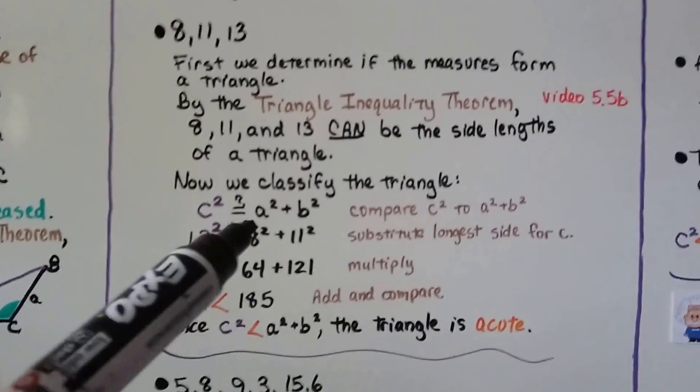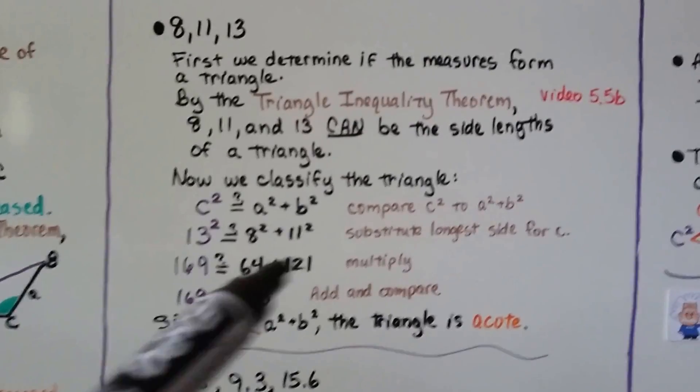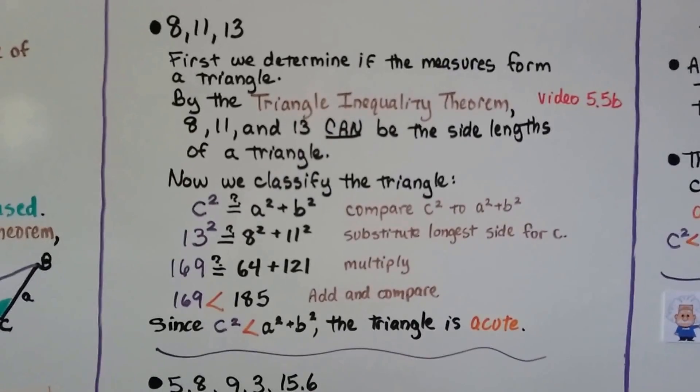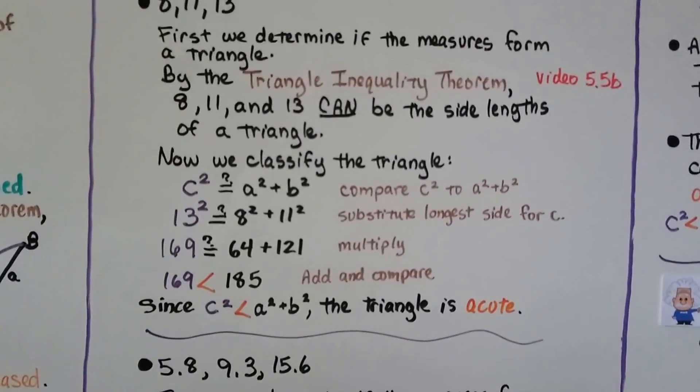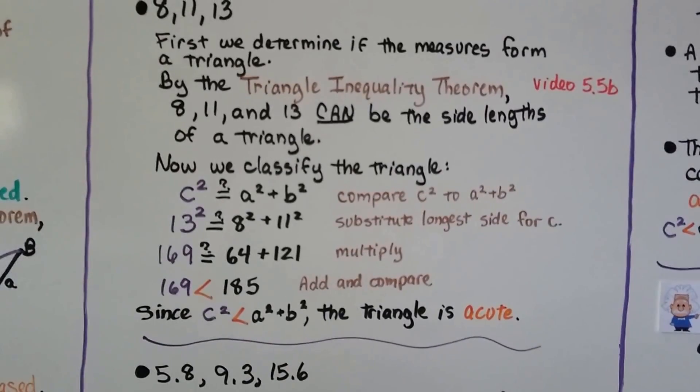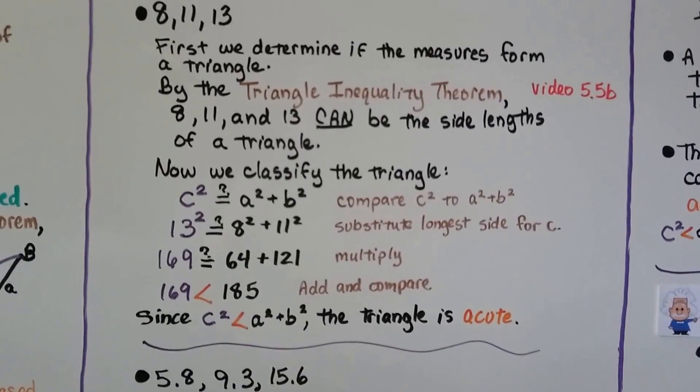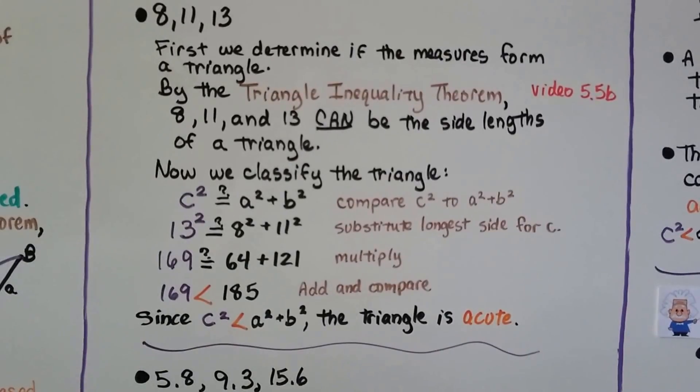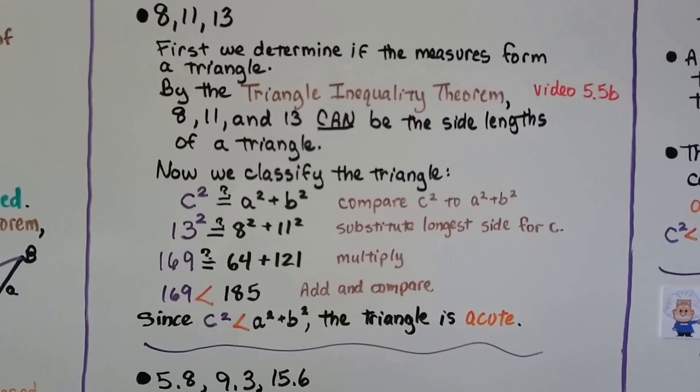Well, 13² is 169, 8² is 64, and 11² is 121. When we add and compare them, we get 169 < 185. Since c² < a² + b², the triangle is acute.